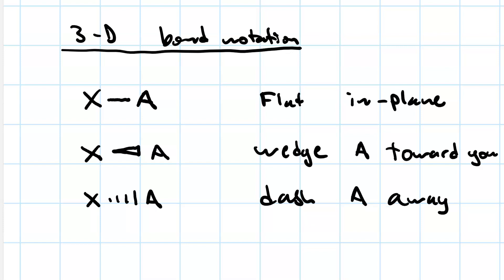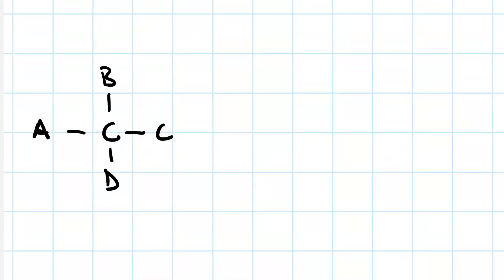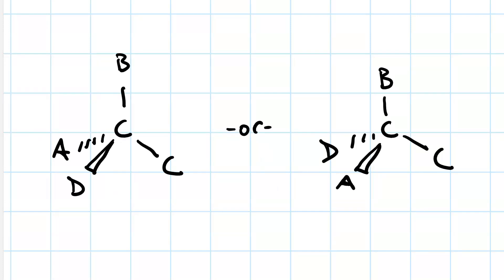Thus, to draw this as being tetrahedral with our central carbon, we can put atom D on the wedge, atom A on the dash, group C and group B in the plane. And now the peripheral groups will point toward the corners of the tetrahedron. But this could also mean switching the wedge and the dash, and we don't know which is which from the Lewis structure.